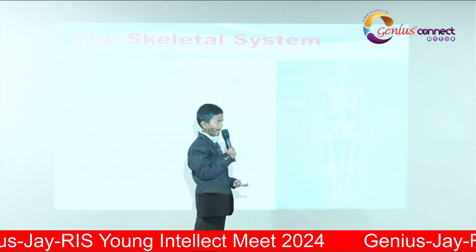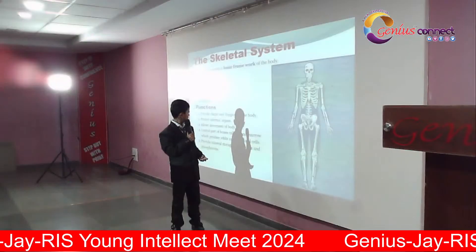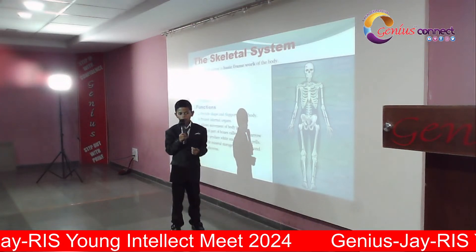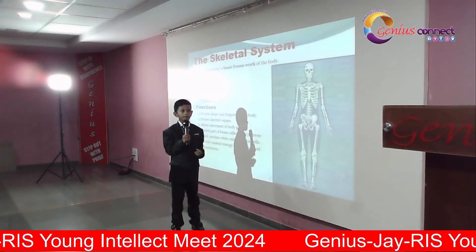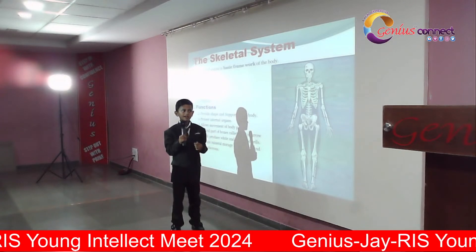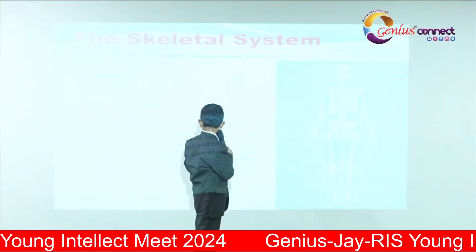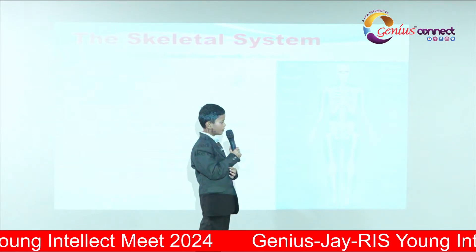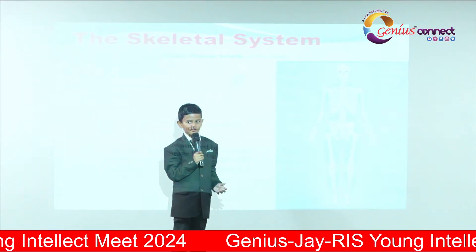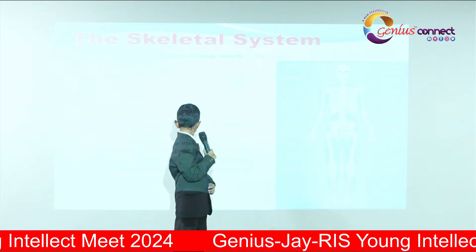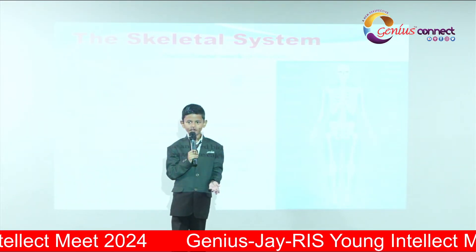Bones, cartilage, ligaments, and all. The skeletal system provides shape and support to the body. Movement of body parts, to protect internal organs. Central parts of bones called bone marrow produce white and red blood cells. It also provides mineral storage like calcium and phosphorus.